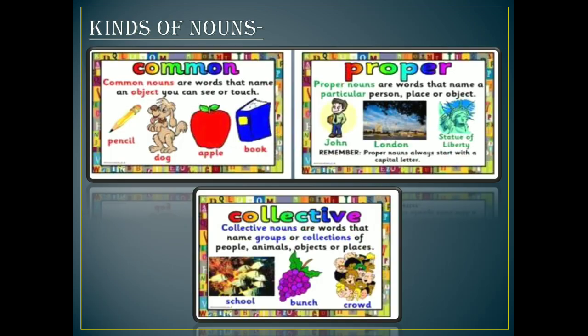Now here come the kinds of nouns. In your syllabus, there are three kinds of nouns which we will discuss now. First is the common noun. Common nouns are words that name an object you can see or touch — the things whatever we see in front of us, they all are common nouns. For example, right now you are watching this video on your mobile screen — that mobile is a common noun. If you are watching it on your laptop or computer, that is also a common noun. When we don't give any particular name to that thing, it is called a common noun.